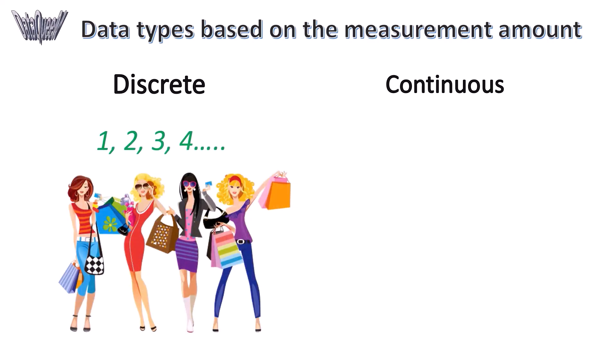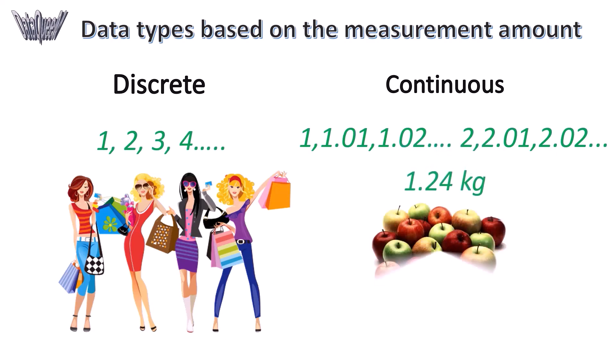Continuous means that the data can be any value along the scale. You can buy 1.24 kg of apples from the grocery store, right?